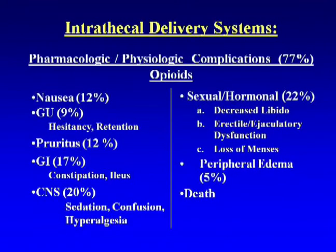Of that 44%, the pharmacologic and physiological complications comprise approximately 77%. We'll look at some of the drugs used in neuroaxial analgesia and review problems associated with them. Opiates are the most common agent used for neuroaxial analgesia, and the problems associated with opioids range anywhere from nausea down to death, with the incidence of each problem listed in parentheses.